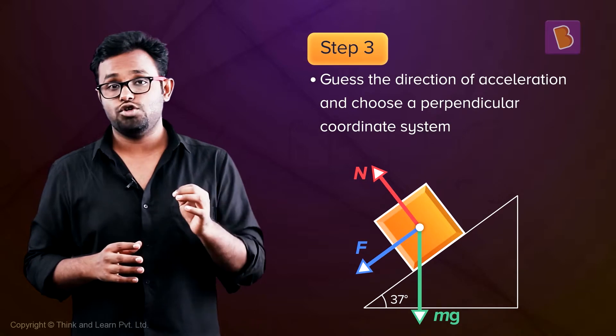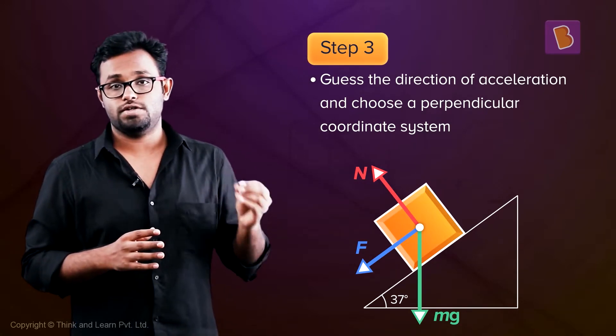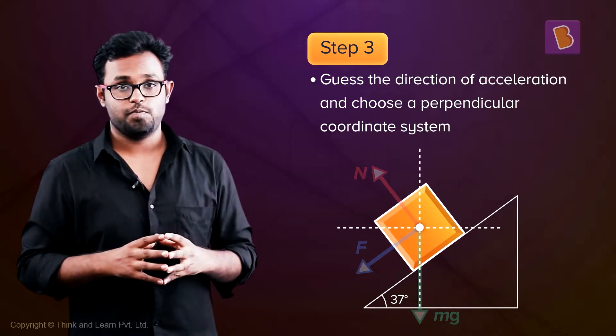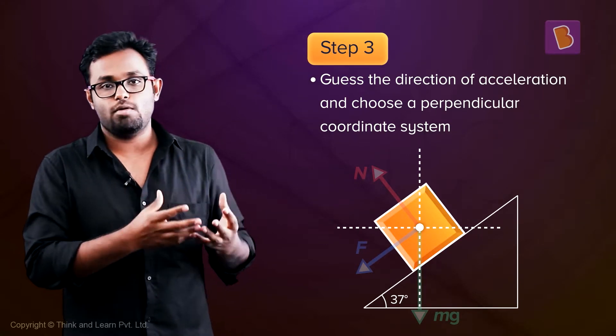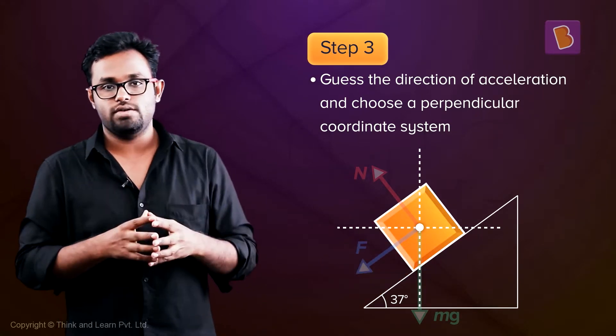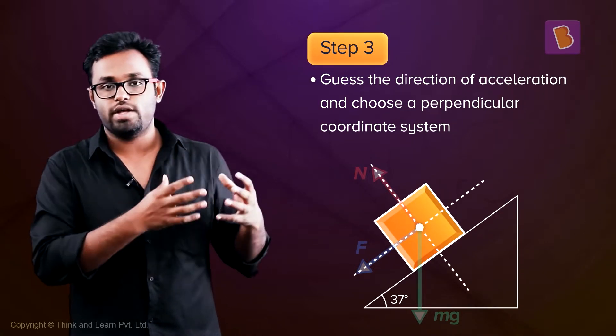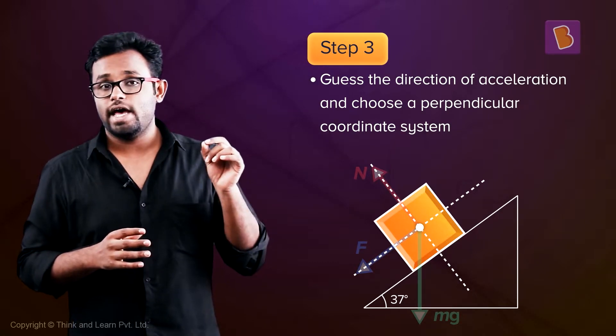Step 3: Guess the direction of acceleration, if possible, and choose a perpendicular coordinate system. In this case, we can choose the axis like this, but because we intuitively know that the block is about to slide down, it is wise to choose it this way, so that the acceleration is along one of the axes. Notice that the axes have to be perpendicular.